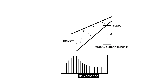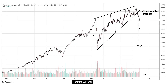A rising wedge is a bearish reversal pattern made up of an upper and lower trend line that converge. The lower trend line is the support. Once broken, the target is a breakout point minus the range of the rising wedge X. Volume declines as the price rises. Support must be accompanied by volume expansion as bearish confirmation. The chart of MasterCard Inc. shows a rising wedge pattern. Price broke below the lower trend line, and the price target is a bearish breakout point minus the range X.